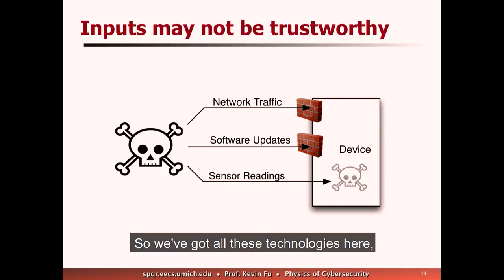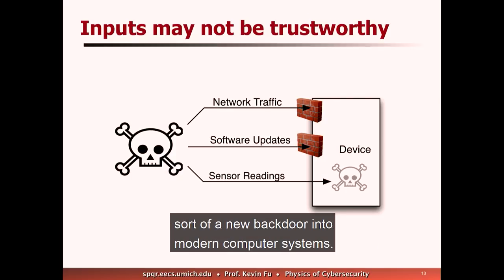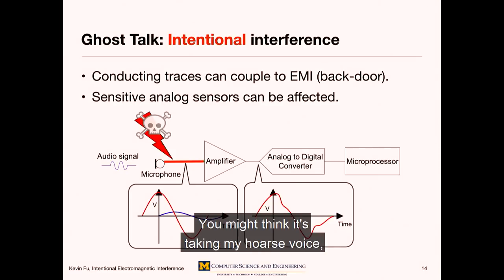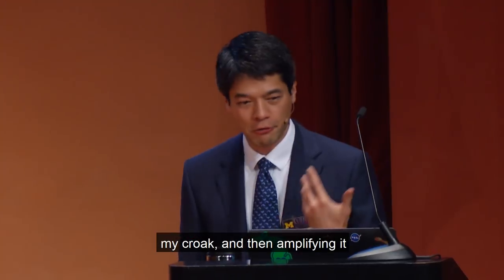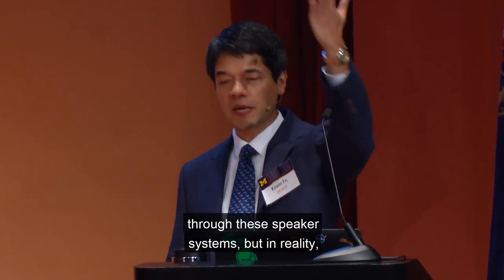We've got all these technologies here at Michigan — we do a lot with network traffic and software updates — but the sensor readings are becoming a new back door into modern computer systems. Like this microphone I'm wearing: you might think it's just taking my hoarse voice and amplifying it. But in reality, there's a piece of wire — typically a little cardboard, like a toilet paper tube — vibrating back and forth with some magnet wire, generating tiny voltages of a few millivolts peak to peak, which get amplified, filtered, digitized, and sent through the computer system to the speakers.